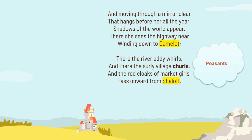Moving through a mirror clear that hangs before her all the year, shadows of the world appear. This is how the Lady of Shalott can see the world — through a mirror. Everything is just its reflection for her, not its reality. She always sees images in a mirror. There she sees the highway near, winding down to Camelot. There are river eddies, circles on the surface of water, surly village churls — surly meaning both grumpy and rough — and long-haired market girls passing on board from Shalott. These are various dynamic images moving around the Lady of Shalott, while she herself is static, yet everything around her, even the river, is moving and showing some form of dynamism.